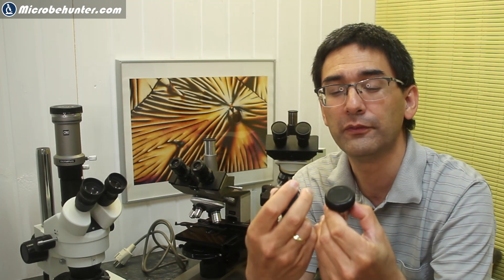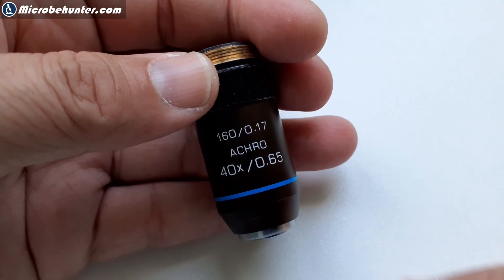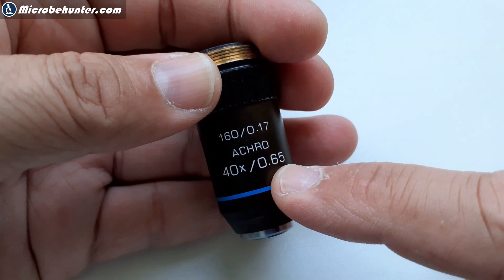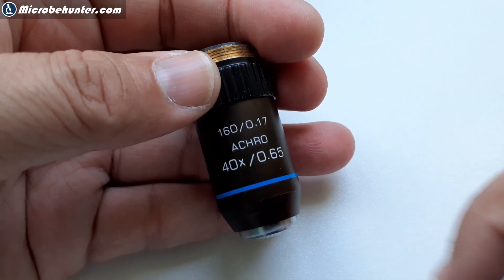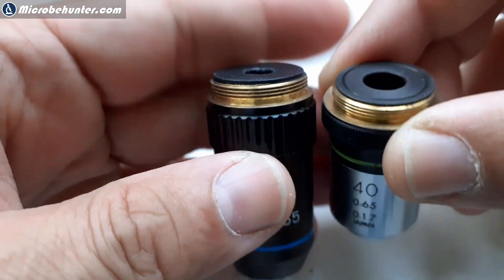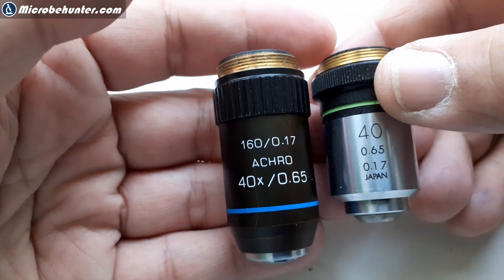The second question is now the following. There are a bunch of numbers printed on the objective here. Of course, the magnification, and then there's usually 0.17 written on it. This refers to the thickness of the cover glass. And then there is also a numerical aperture, which is a decimal value. In this case, 0.65 over here, and also 0.65 over here on the other one. Both of them have the same numerical aperture. This numerical aperture is a measure of how much the objective is able to resolve. The higher the numerical aperture, the finer the details that can be resolved.